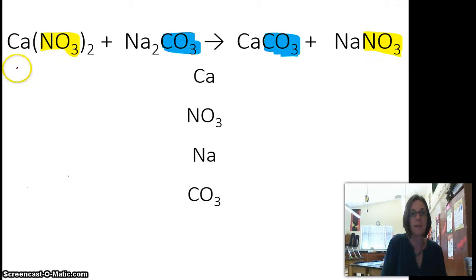So let's count up reactants. How many calciums? One. How many nitrates? Two. How many sodiums? Two. How many carbonates? Just one. It's not in parentheses. It doesn't have an extra number. That three is what makes it carbonate, so that's just one. On the product side, how many calciums? One. Carbonates? One. Sodium? One. Nitrate? One.